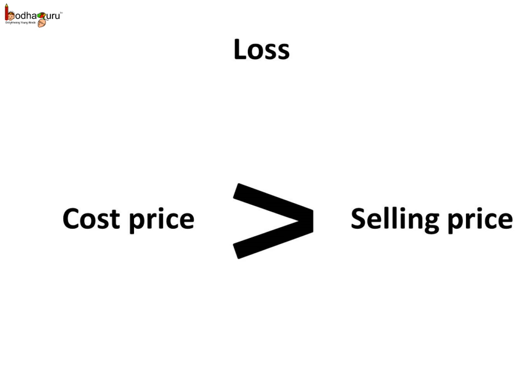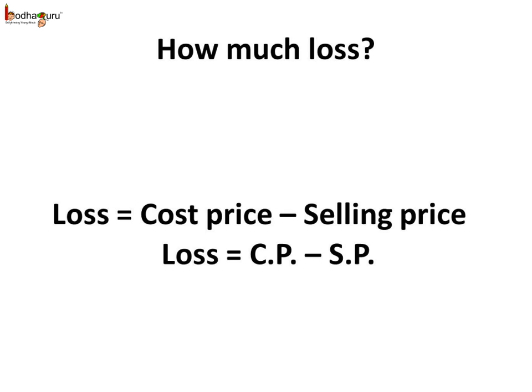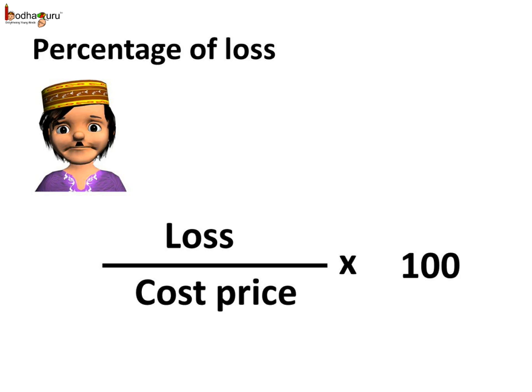And what about loss? Loss means cost price is greater than the selling price, and loss equals CP minus SP. We can express the loss in percentage too. Percentage of loss equals loss divided by cost price multiplied by 100, meaning how much loss is made per 100 rupees.